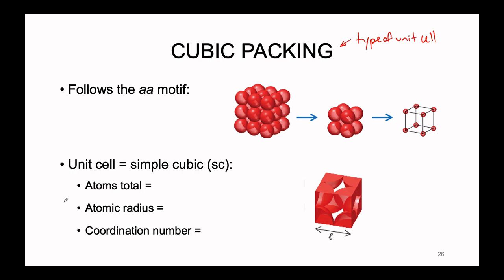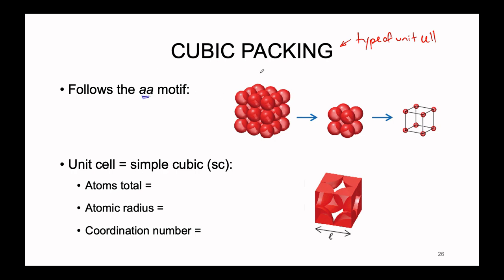Cubic packing follows what is called the AA motif. The AA motif is labeled this way because all of the atoms are directly stacked on top of each other. If we arbitrarily define a vertical axis as being the A axis, we can see that in each layer, the atoms are directly stacked on top of each other along the A axis — from layer one to layer two to layer three, all of these are A's in terms of coordinate. We could name this the AAA motif indefinitely, but AA is the simplest representation of this repeating pattern.